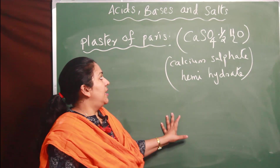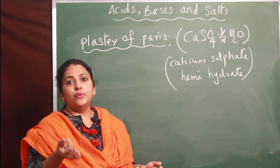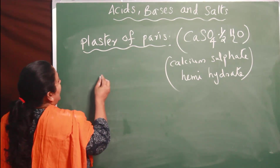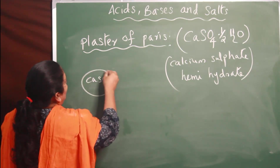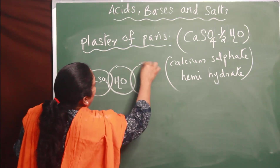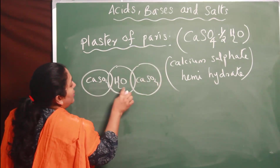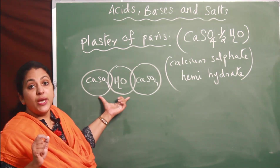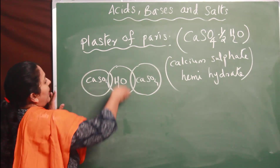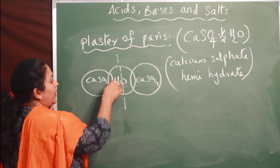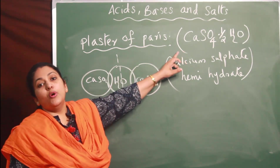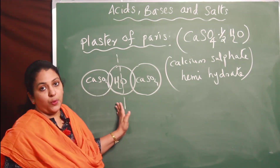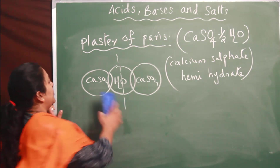Don't worry - actually two calcium sulfate molecules are sharing one molecule of water. So when we write only one part, we make it half: CaSO4·½H2O. This is for chemical formula writing purposes only. Two calcium sulfate molecules share one water molecule, so for a single formula unit we write CaSO4·½H2O, calcium sulfate hemihydrate.